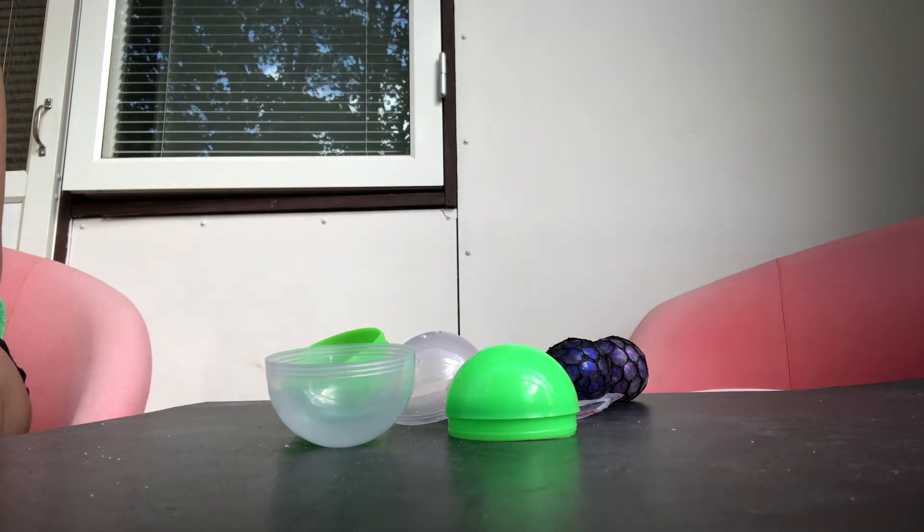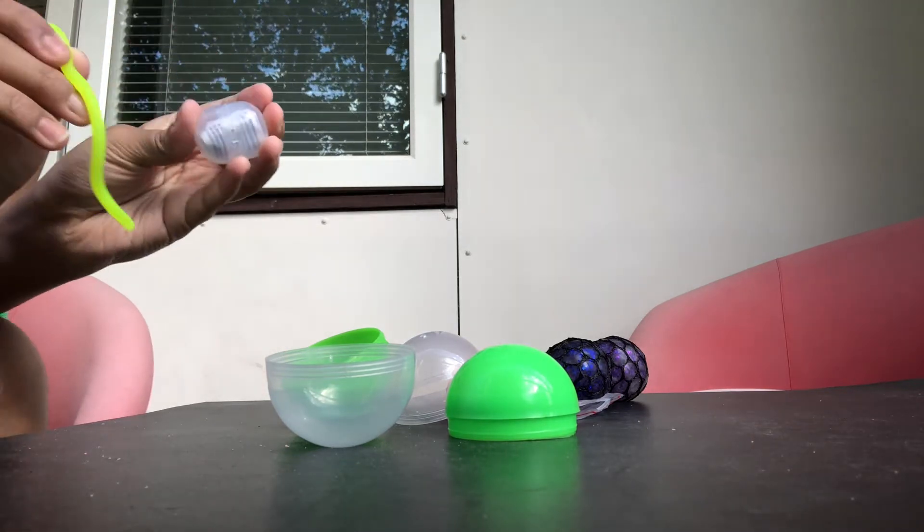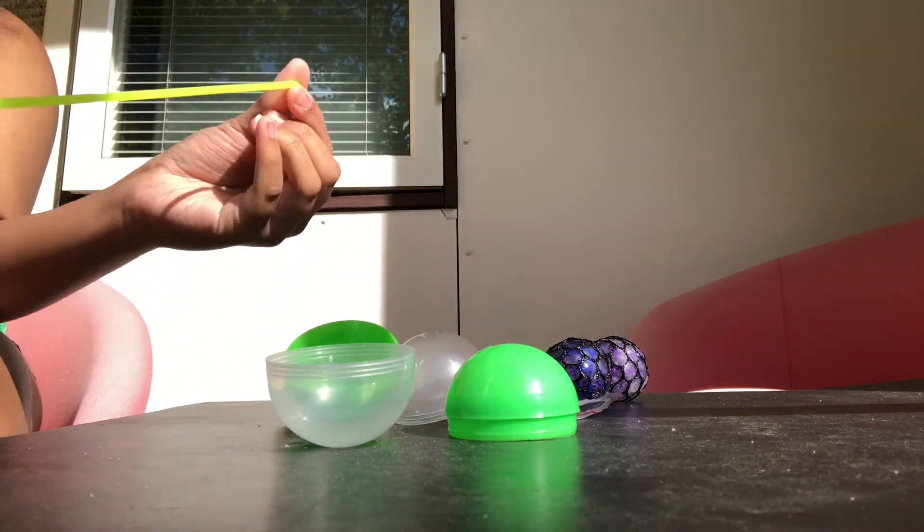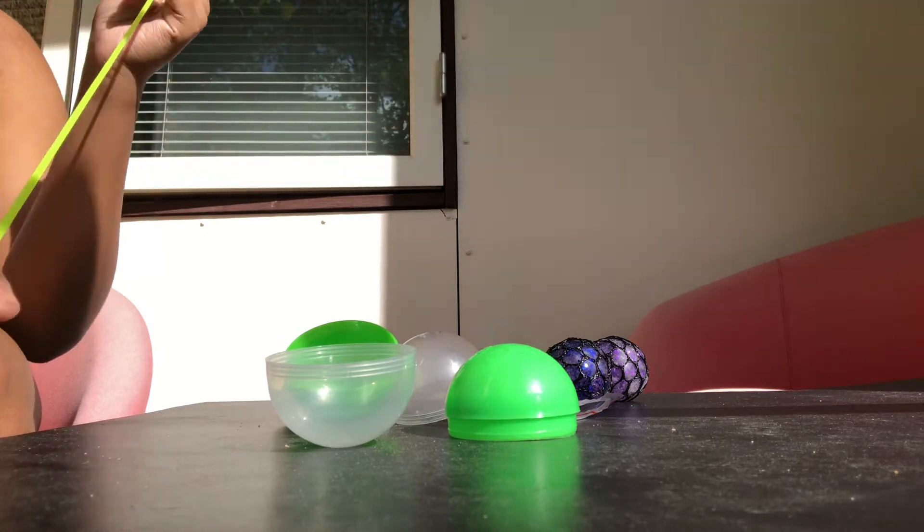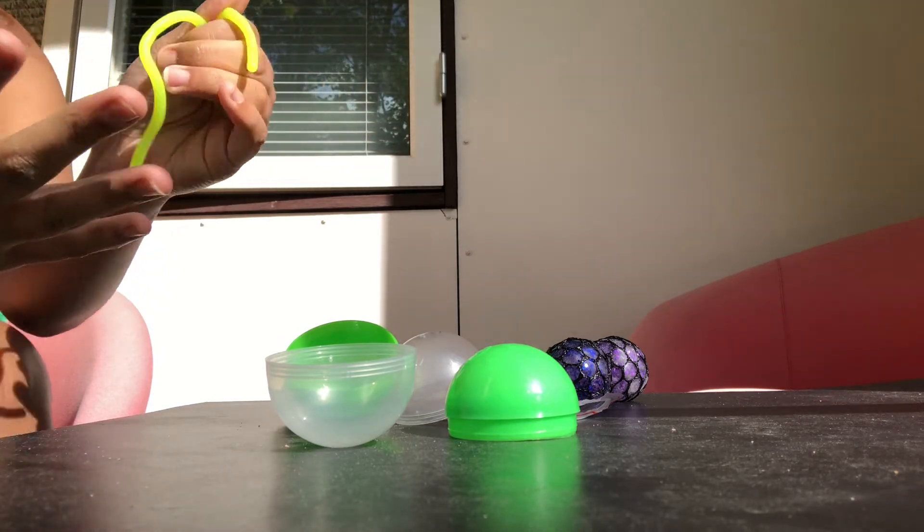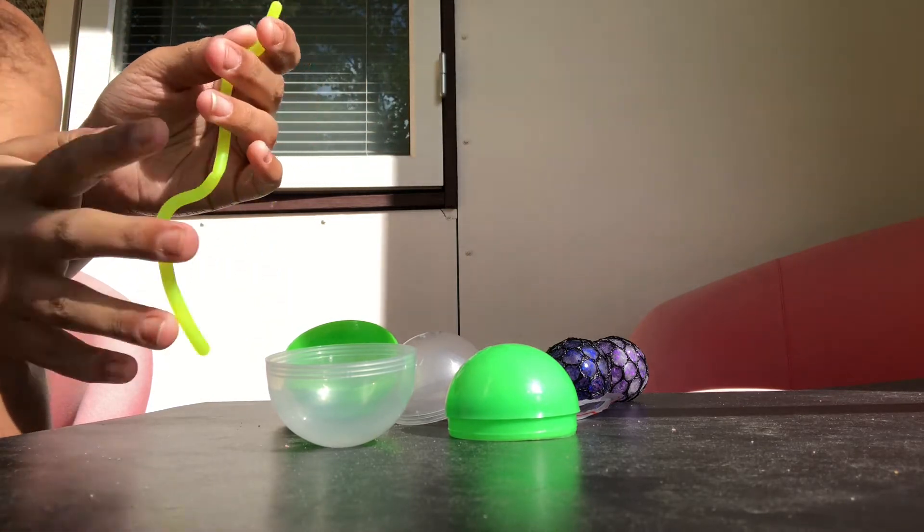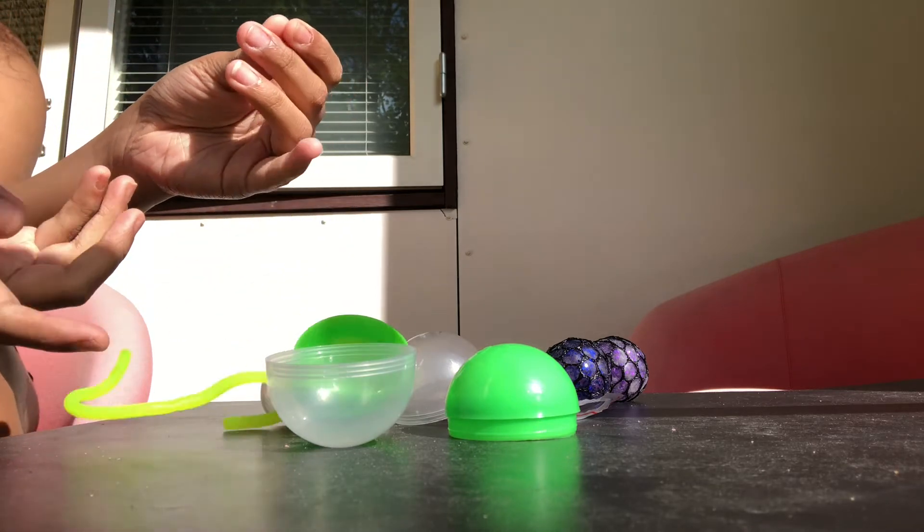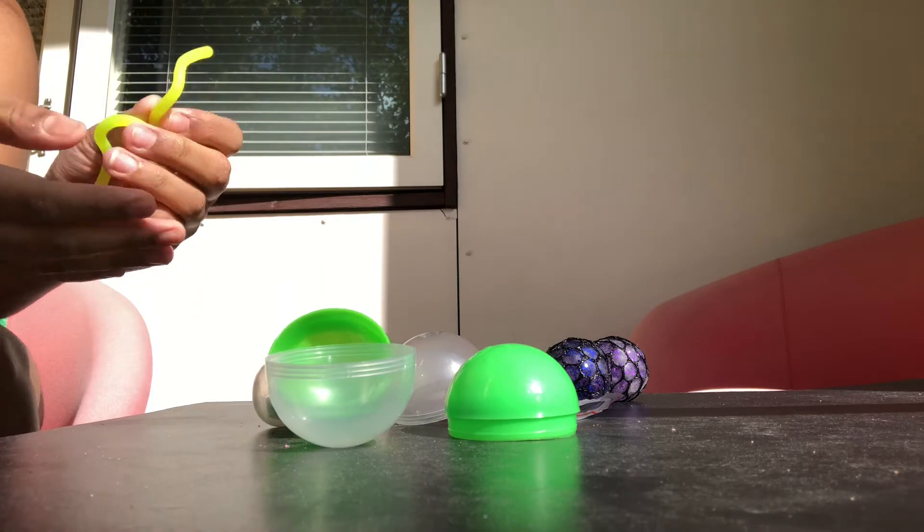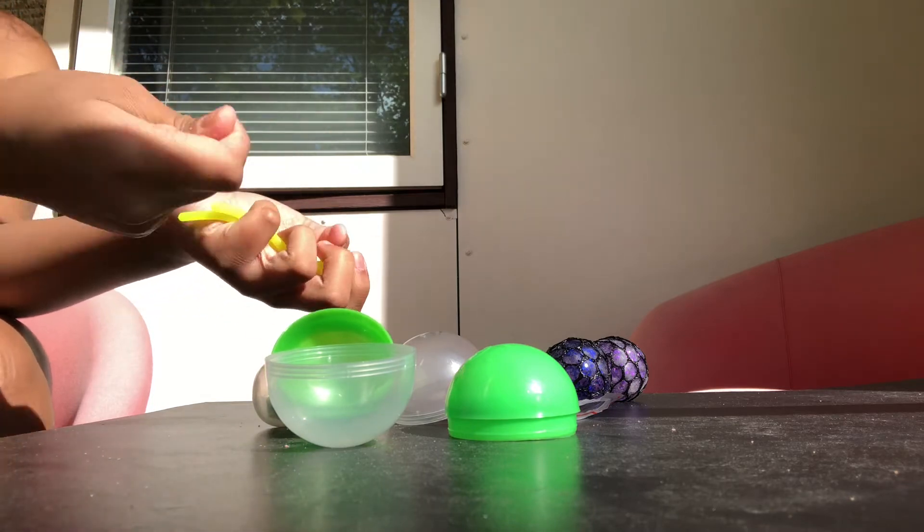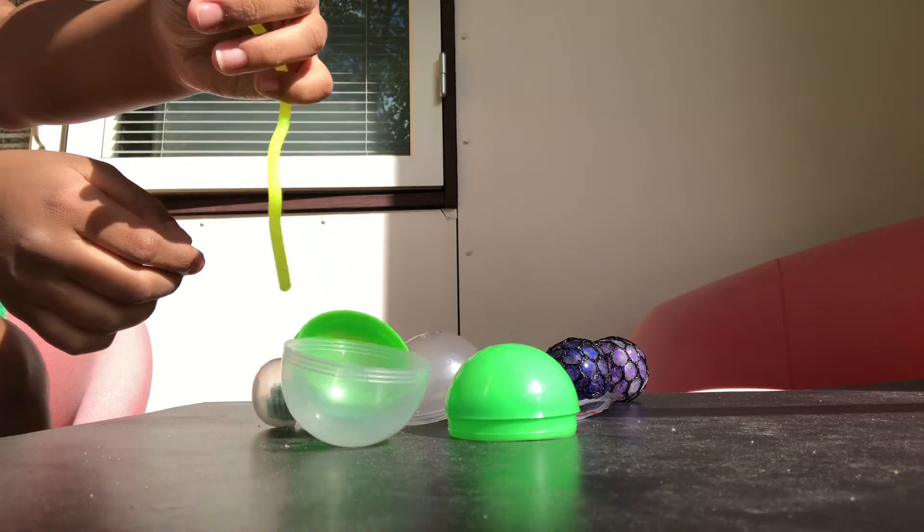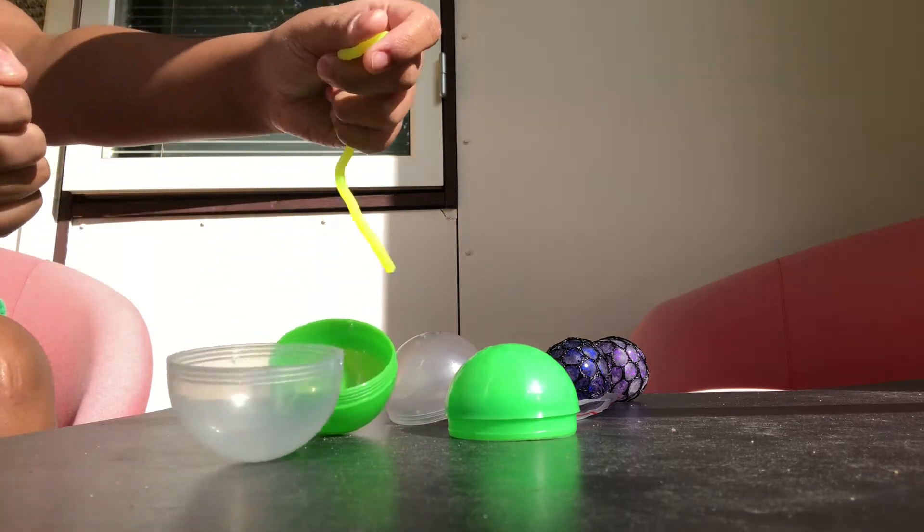And then I got a mini monkey noodle. So this is the capsule and this is the monkey noodle. This is like so cute, you can stretch it, you can like make things. This is like so cute, I really love it. So I got this neon yellow one because we can choose what the one we want. We have to just twist it and then it comes, so I got this really cute neon monkey noodle.